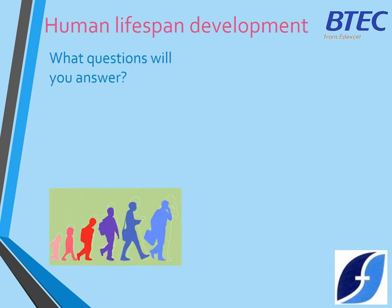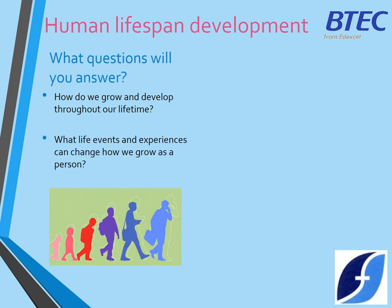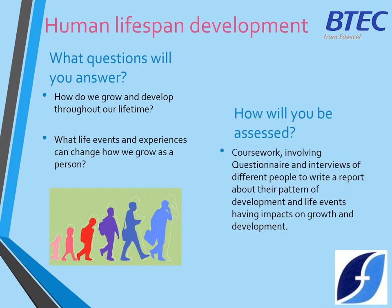The first one you do in Year 10 is Human Lifespan Development. The sorts of questions we think about are: how do we grow and develop through our lifetime? What are those milestones? What skills are you developing at different ages? What life events and experiences will change how you grow as a person? What are those things that make us our own individual person — what makes you different from somebody else the same age? This unit is assessed through a piece of coursework involving questionnaires and interviews of different people, then writing a report about their pattern of development and the life events that have impacted on them growing into the person they are today.